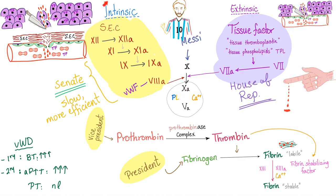There is another story called the intrinsic pathway. We need something from within the vessel, such as the subendothelial collagen, to activate factor 12, then 11, skip 10, then 9 and 8 — so literally 8, 9, 11, 12. Factor 8 needs von Willebrand factor as a carrier, sustainer, and half-life prolonger. Then it activates factor 10 and you know the rest of the story.